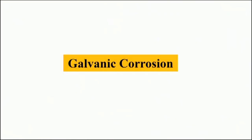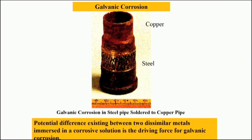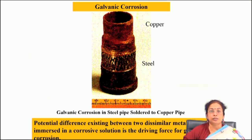In this lecture I will discuss the second mode of corrosion, that is aqueous corrosion, particularly galvanic corrosion. Galvanic corrosion is a form of corrosion which usually occurs when two dissimilar metallic materials are electrically connected and placed in an aqueous media or electrolyte. The potential difference existing between the two dissimilar materials is the driving force for corrosion to occur.